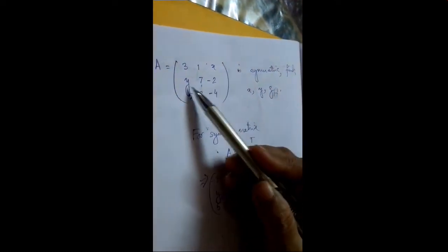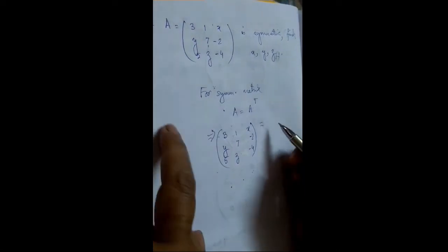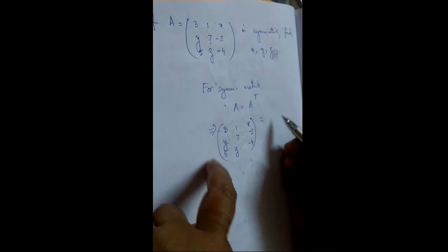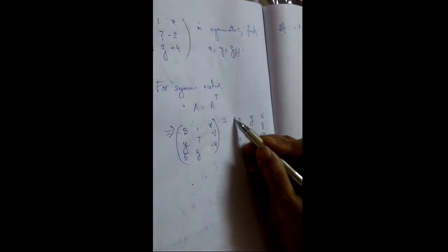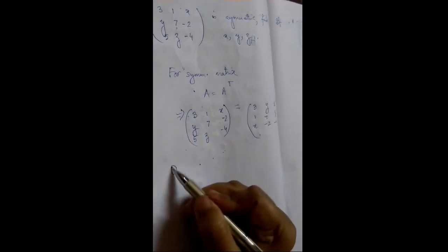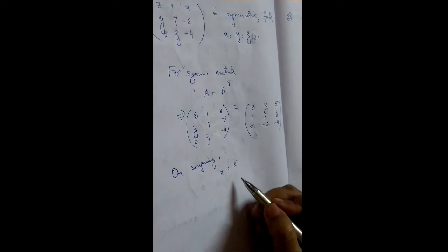Now I have a matrix A which is symmetric and we are to find the elements X, Y, Z — a few missing elements — given that it is symmetric. For a symmetric matrix we know A is equal to A transposed. On comparing the corresponding elements we get X is equal to 5, Y is equal to 1, and Z is equal to minus 2. So this is our solution.